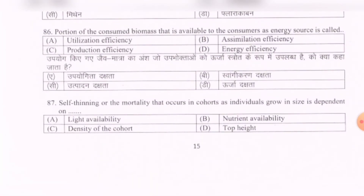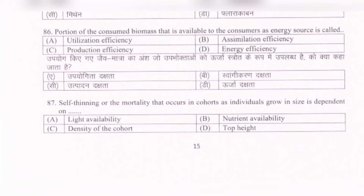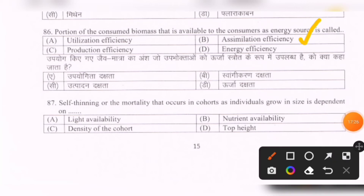Next question: The portion of consumed biomass that is available to the consumers as an energy source is called — options are: utilization efficiency, assimilation efficiency, production efficiency, energy efficiency. The correct option is B — assimilation efficiency.